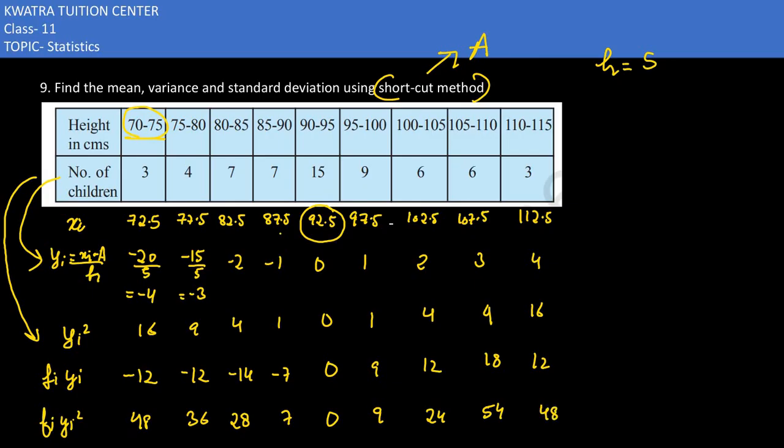Next you need to put the value for mean. How will we get x̄? x̄ is equal to a plus summation f_i*y_i divided by summation f_i, times h. So a is 92.5 plus summation f_i*y_i. We get 6 because if you add the values, some cancel out directly.